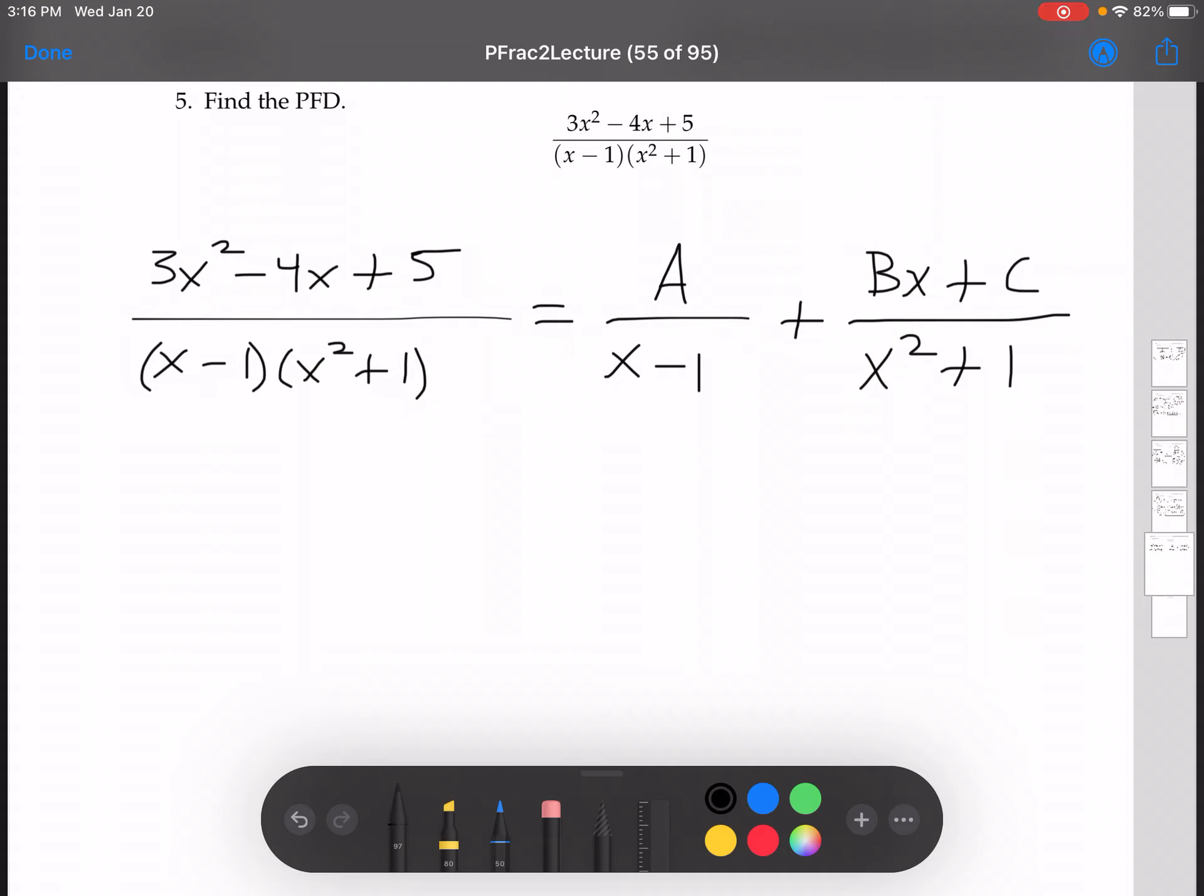Now multiplying both sides by the denominator of the left-hand side, by this thing here, x minus 1 times x squared plus 1, we get 3x squared minus 4x plus 5 equal to a times x squared plus 1 plus bx plus c times x minus 1.